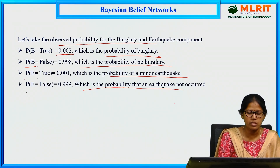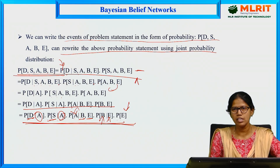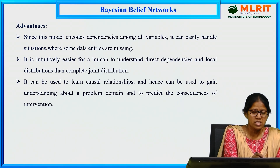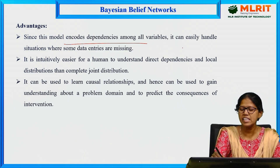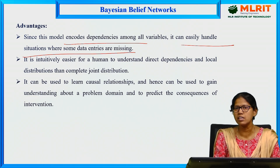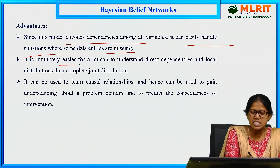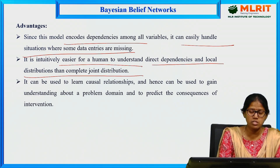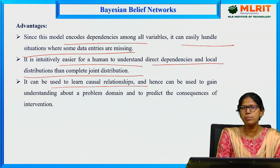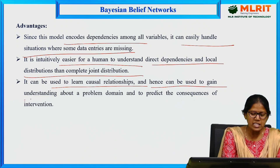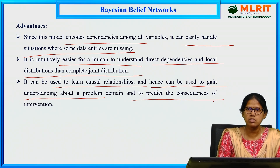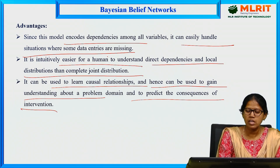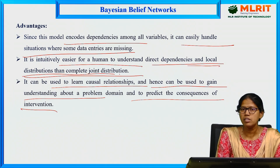We substitute these values into the joint probability formula to find the uncertainty using Bayesian belief networks. The advantages of Bayesian belief networks are: since the model encodes dependencies among all variables, it can easily handle situations where some data entries are missing. It is intuitively easier for humans to understand direct dependencies and local distributions than the complete joint distribution.